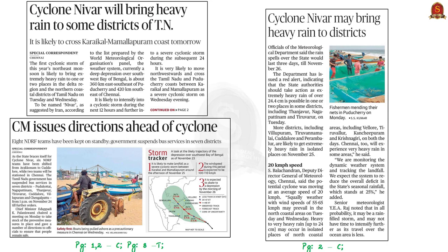Today's news says that the depression has progressed into a cyclone named Cyclone Nivar. As a matter of fact, heavy rains are being experienced in Chennai today. In May this year, we had a cyclone called Amphan. So the question is: how are cyclones named?